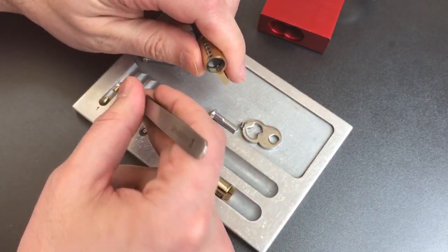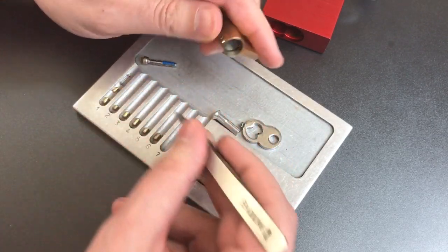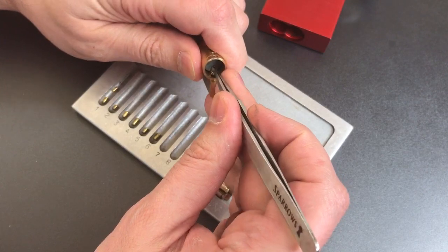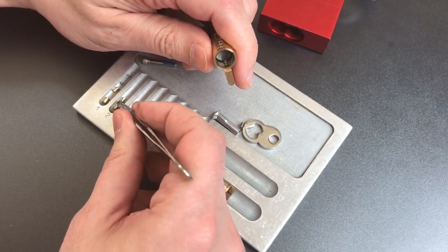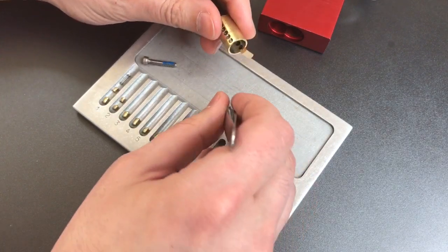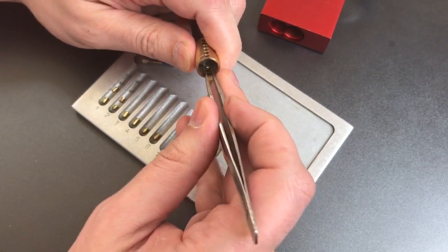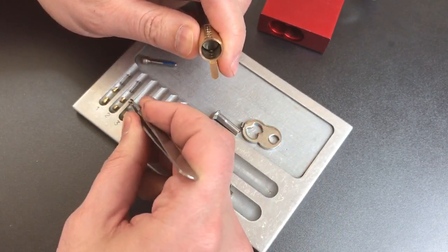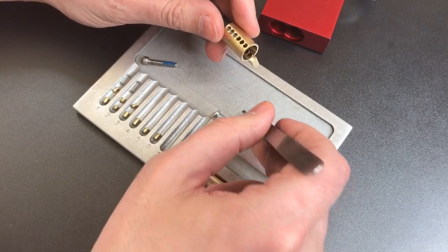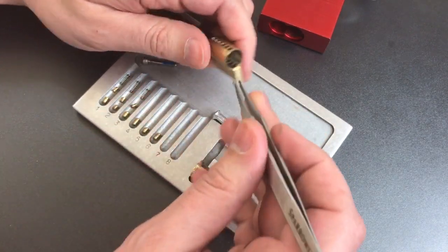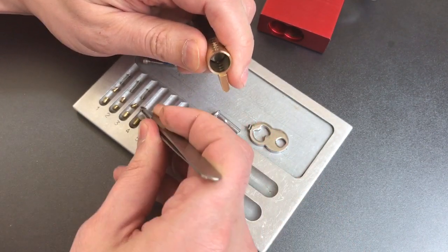Okay, driver pin number one is a spool. And in a recent Pac Lock video featuring the Block Lock, Greg, the president of Pac Lock, posted a comment that these springs actually do have different tensions to them. So I'm going to be careful as I take these springs out, and we'll take a closer look at them. Assuming that is the case, it's a very nice anti-bump feature. It probably helps with pick resistance as well.